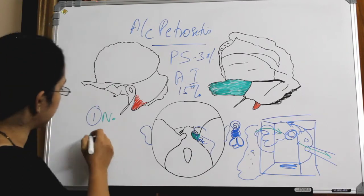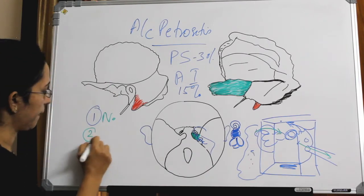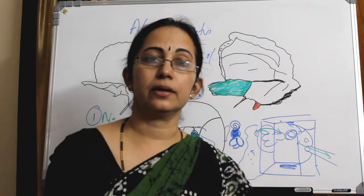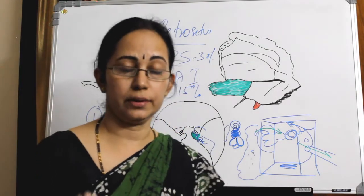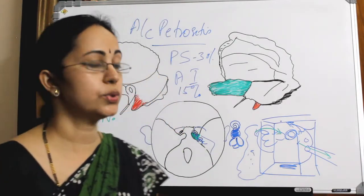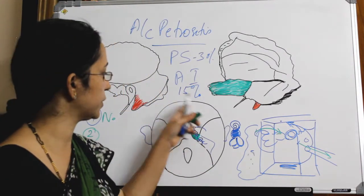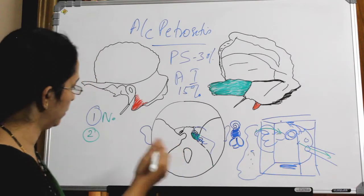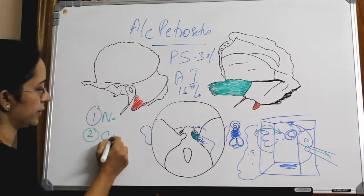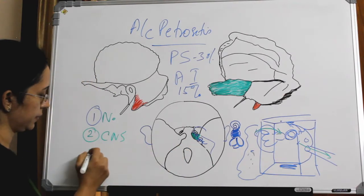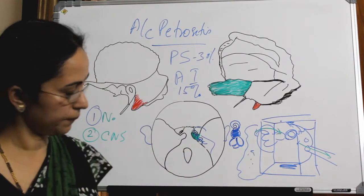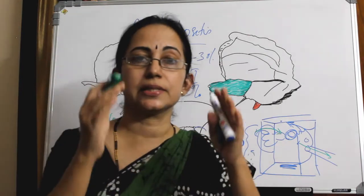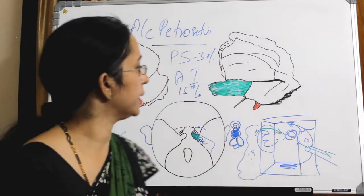The second reason is that it lies in close proximity to the central nervous system. And third, the petrous apex is shaped like a pyramid.